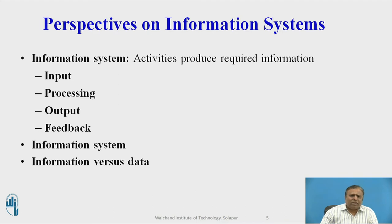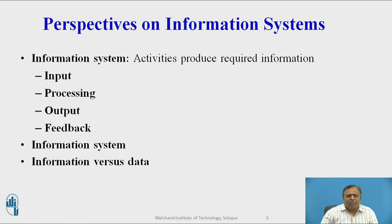Now we are going to see what is information versus data. Data are a stream of raw facts — raw material — which may be textual, digital, or alphanumerical. Information is data shaped into a meaningful form, where operations are applied on raw data to produce knowledge. This is called information.